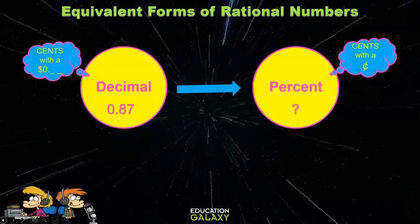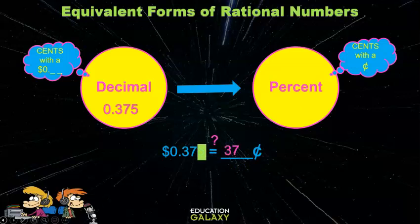And to write zero point eighty-seven as a percent, put a dollar sign in front and read it. This is eighty-seven cents, so it's eighty-seven percent. And look at this one guys. Cover up the five at first and read it. This is thirty-seven cents.